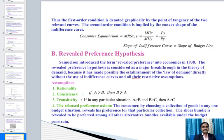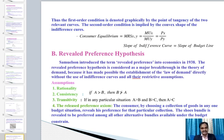The consistency assumption states that if the consumer chooses bundle A in a situation where bundle B is also available, they will not choose B in any other situation where A is also available. Symbolically: if A > B, then B cannot be greater than A.